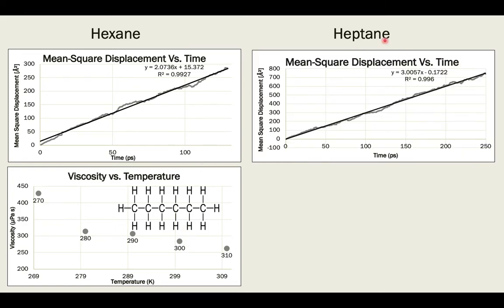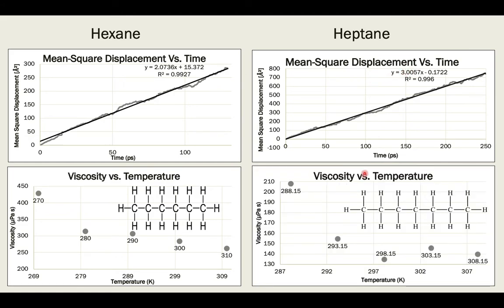We also did the same for heptane. We did the mean squared displacement and then used the slope to calculate the viscosity and then plotted it for different temperatures. As you can see, it also decreases as a function of temperature, which should be the case as well.